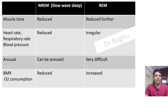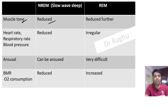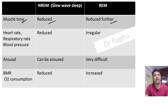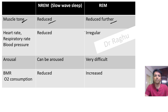Next, let's look at muscle tone. The muscle tone is reduced in NREM sleep and reduces further in REM sleep. There is a state of hypotonia in NREM sleep, and this hypotonia increases further when the person enters into REM sleep.